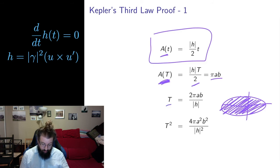If I rearrange this for T, I get T is 2πab over |h|. I square it, I get this. So now I have my T². I want to arrange this side so that it's something times a³. How am I going to do that?